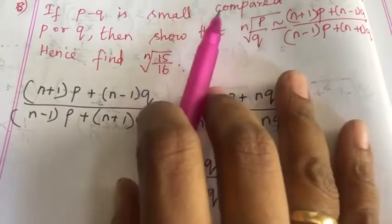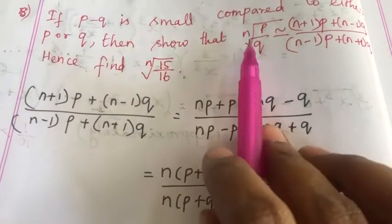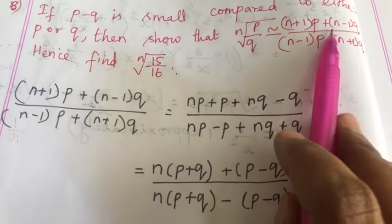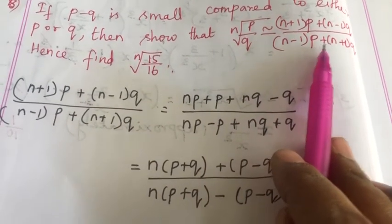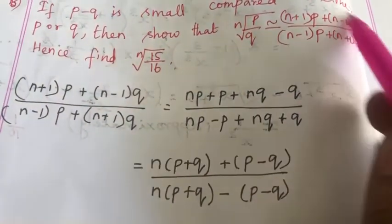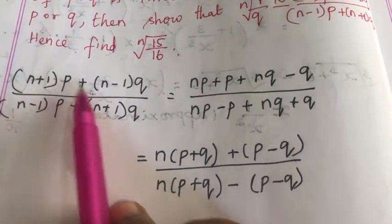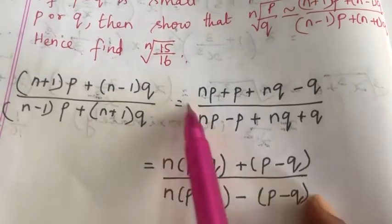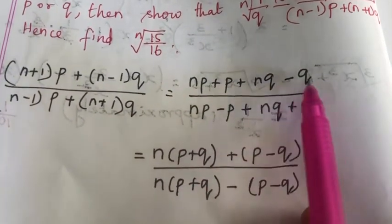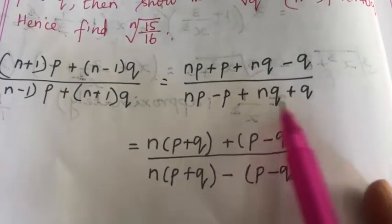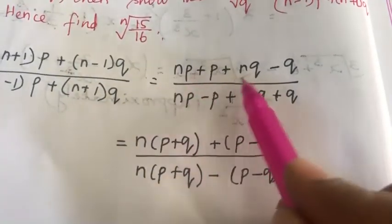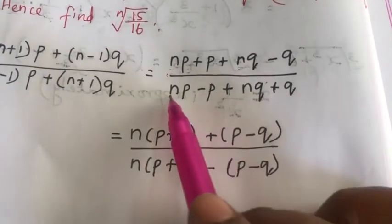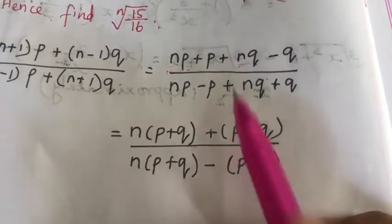Problem 8: If p − q is small compared to either p or q, show that the nth root of p/q is approximately equal to [((n+1)p + (n−1)q) / ((n−1)p + (n+1)q)]. Let us take this expression and expand: (n+1)p + (n−1)q divided by (n−1)p + (n+1)q. Multiplying inside: np + p + nq − q divided by np − p + nq + q. From these two terms we can take n as common: n(p+q) + (p−q) in numerator; n(p+q) − (p−q) in denominator.